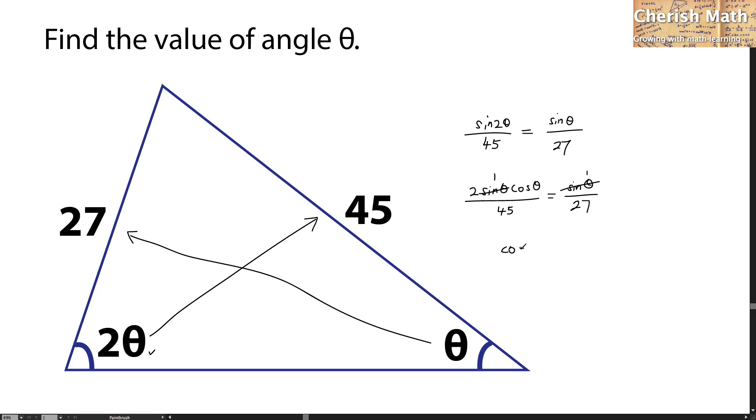What is the value of cos theta? That would be 45 divided by 2 times 27. I further simplified this part. That would be cos theta equals 5 over 6. I'm going to use 9 to divide it.